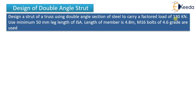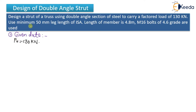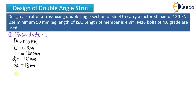Step 1 — Given data: it is a double angle strut. Factored load is 130 kilonewton. Minimum 50 mm leg should be used, meaning the ISA section from the steel table should have at least 50 mm leg. Length of member is 4.8 m, i.e., 4800 mm. M16 bolts are used, so d = 16 mm and d₀ = 18 mm. Grade 4.6 bolts are specified.